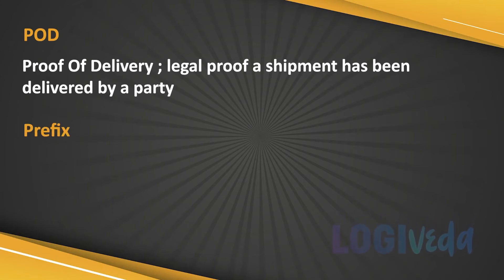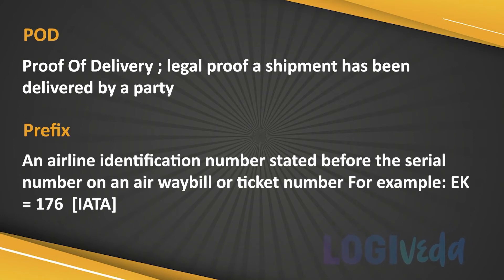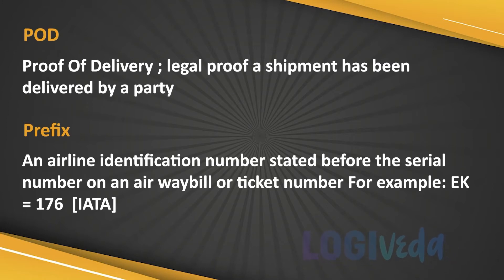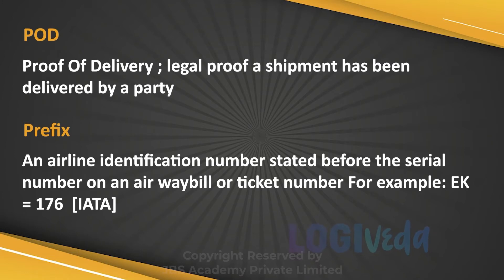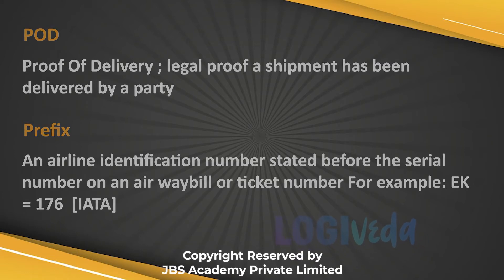Prefix: an airline identification number stated before the serial number of an airway bill or ticket number. For example, EK is Emirates Airlines and its numeric code is 176.